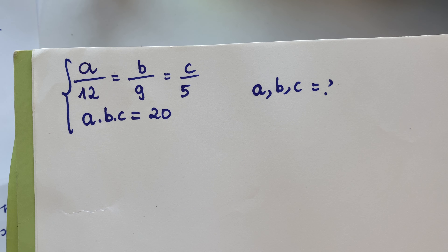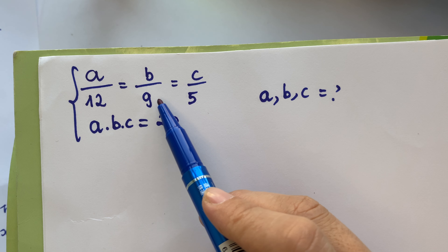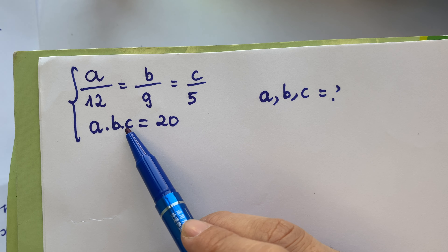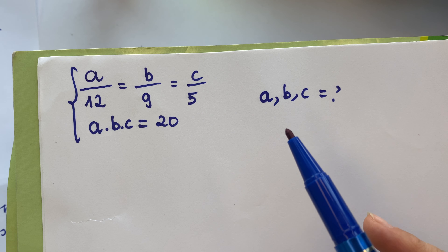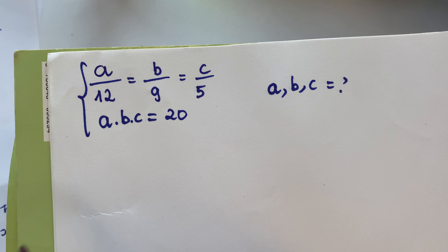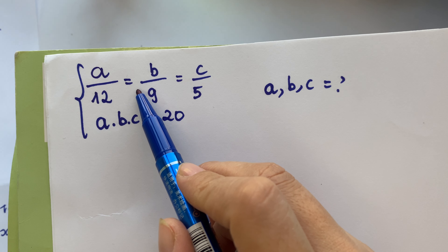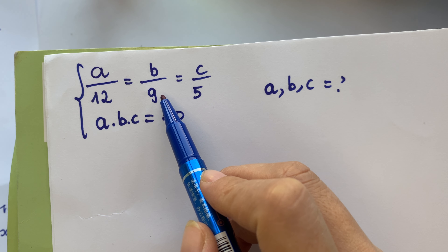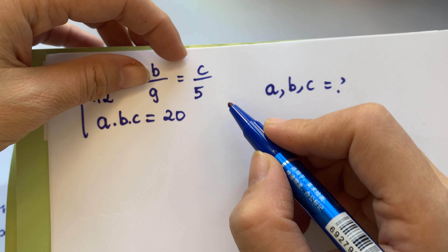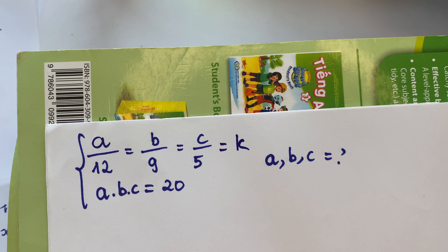Hello everyone. How to solve: a over 12 equals b over 9 equals c over 5, and a times b times c equals 20. You need to find a, b, and c. Look at the first step — you need to put a over 12 equals b over 9 equals c over 5, and relate each ratio to k.